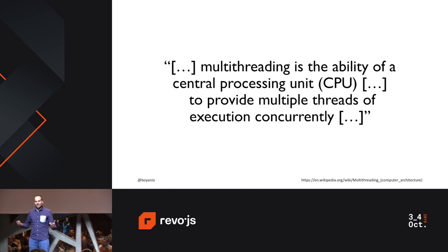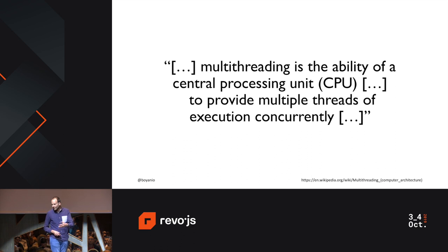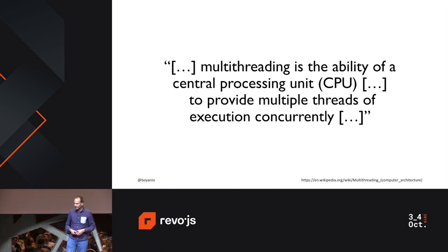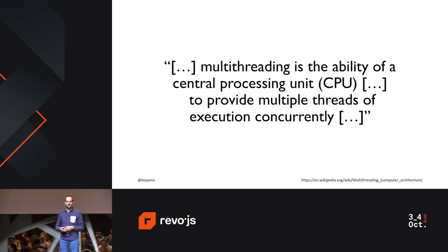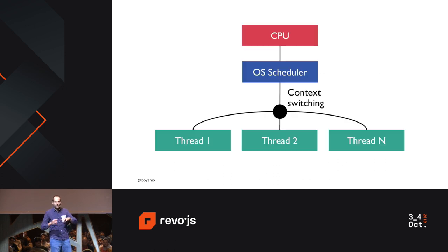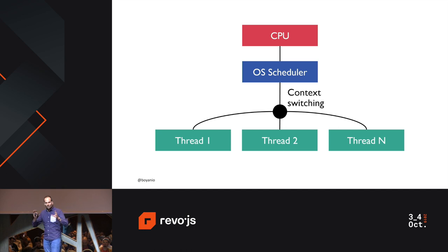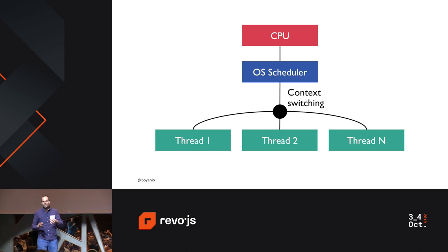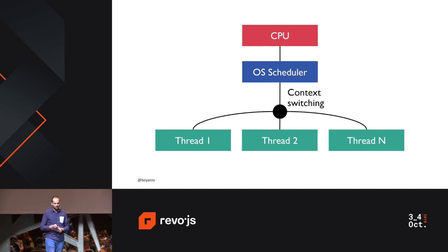What does multi-threading really mean? If we open Wikipedia, we would read: multi-threading is the ability of a central processing unit to provide multiple threads of execution concurrently. To make this definition more complete, we need to understand what a thread of execution is. Wikipedia says a thread of execution is the smallest sequence of programmed instructions that can be managed independently by a scheduler. Visually, we have a CPU box, an OS scheduler in front of it, and threads in front of that — the scheduler uses context switching to run them on the same CPU.